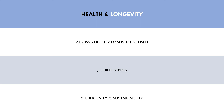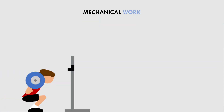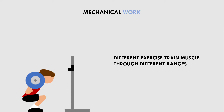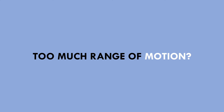So what influence does all of this have on exercise selection? Going back to what we mentioned earlier, different exercises take muscles through different ranges of motion. Therefore, trainees should generally preference exercises which take the muscle through a larger range of motion than those that take the muscle through a shorter range. For example, full depth high bar squats will take the quads through a larger range than low bar box squats.